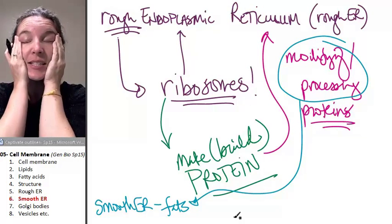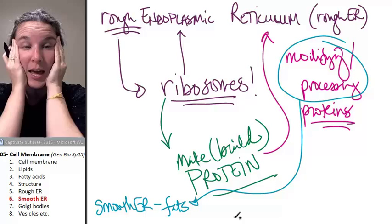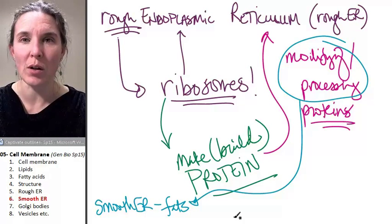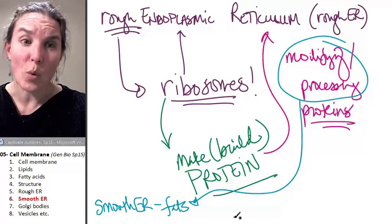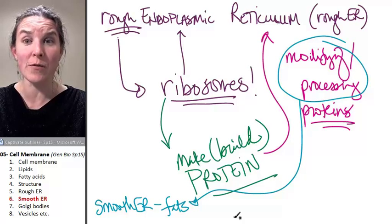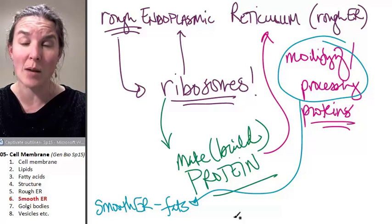The crazy thing is the smooth endoplasmic reticulum has different jobs depending on where it is. So, for example, in your liver, when you get a wild hare and decide, oh, this weekend it would be really fun to drink yeast pee and poison my liver,